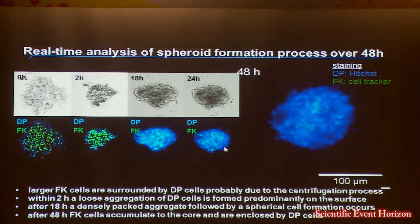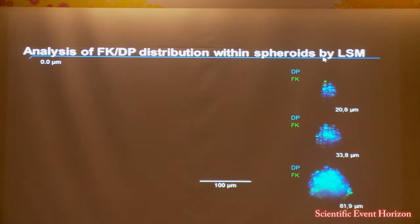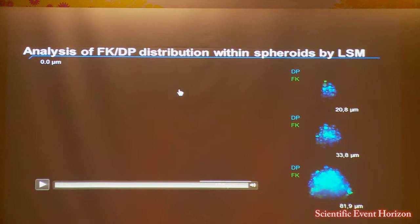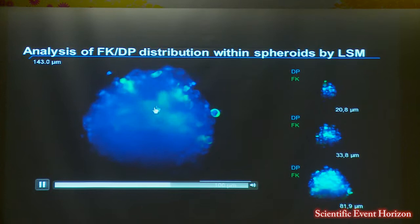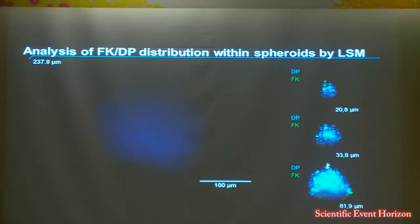To further analyze this hypothesis, we used another method — light-sheet-based microscopy — that allows a non-invasive look inside the spheroid. In the next movie, you can see the spheroid in different layers, going from the top to the bottom, starting with the dermal papilla cells. In the middle, there is a green core of keratinocytes surrounded by the dermal papilla cells, as you can see again in these pictures.